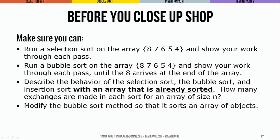Before you close up, be sure you can run a selection sort on an array like 8, 7, 6, 4, 5 and show your work through each pass. Same for bubble sort — you can do that until the 8 arrives at the end of the array and know how you'd proceed from there. Think about how a selection sort, bubble sort, and insertion sort would work with an array that is already sorted — how would they behave as described? Finally, modify the bubble sort method so that it can handle an array of objects, not just ints.